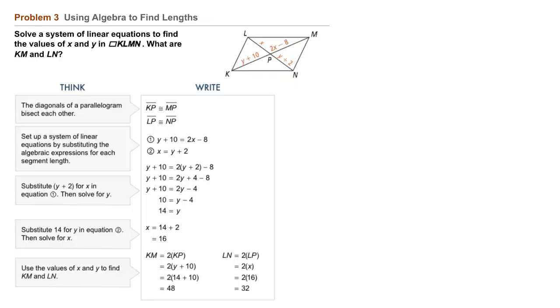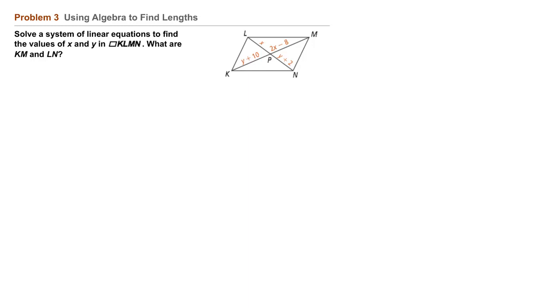Problem 3. Using algebra to find lengths. Solve a system of linear equations to find the values of X and Y in parallelogram KLMN. What are KM and LN? Consider what we think on the left. The diagonals of a parallelogram bisect each other. We just learned that, so we can write that.